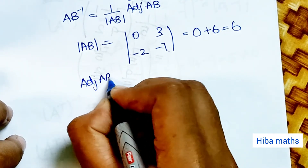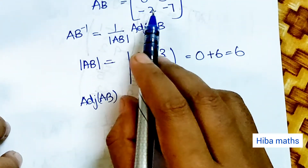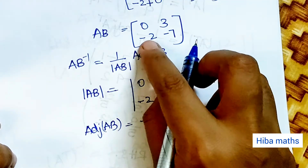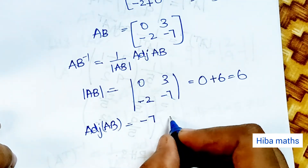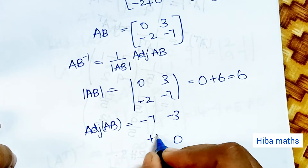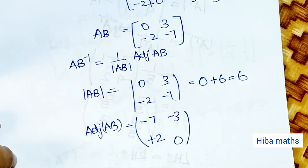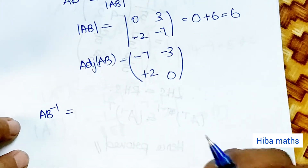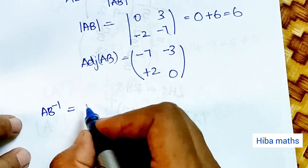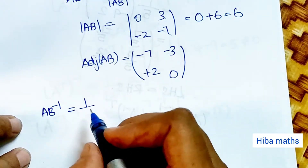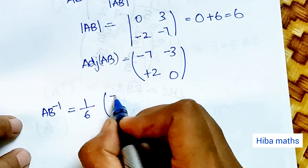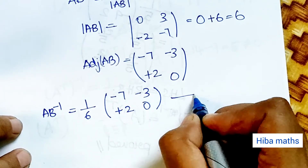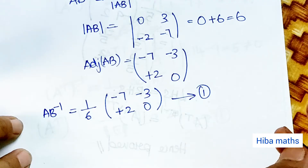Adjoint of AB for a 2×2 matrix: diagonal interchange gives −7, 0 and the second diagonal sign change gives −3, +2. So AB inverse equals 1 by 6 into [−7, −3; 2, 0]. This is equation number 1.